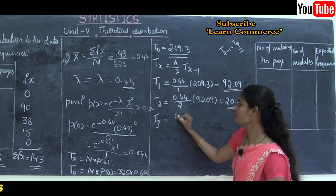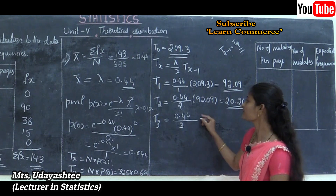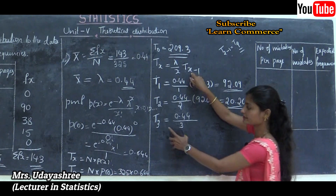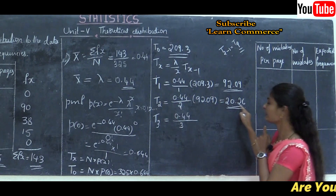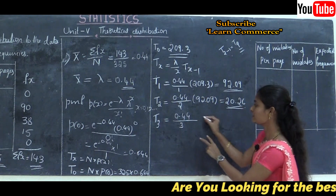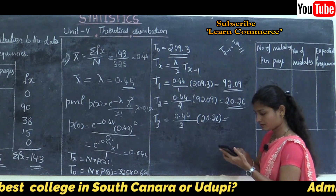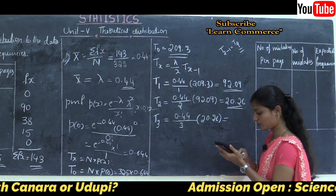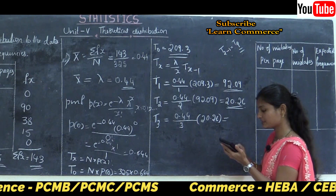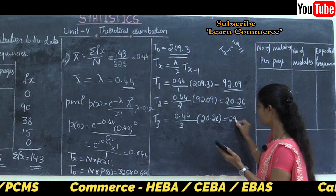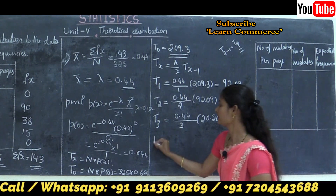Next, calculate T(3). Substituting X = 3: T(3) = (0.44 / 3) × T(2) = (0.44 / 3) × 20.26 = 2.97.